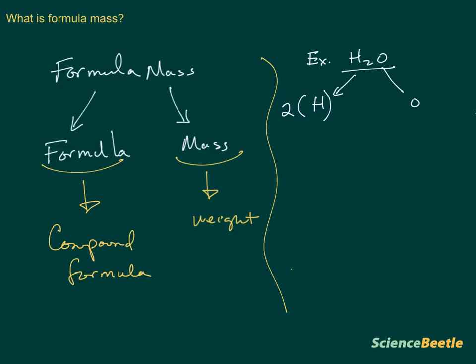Essentially the formula mass for this particular compound would be if we take two times the mass of hydrogen. In this case, if we look this up on the periodic table, the mass is 1.008 grams per mole for the hydrogen. And then the oxygen mass here is going to be 15.999. So if we add these two together here, we'll come up with a very specific mass.